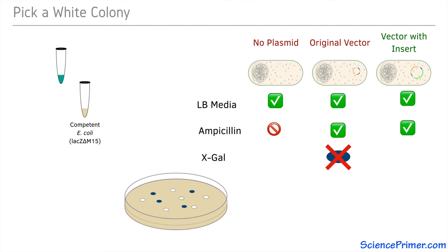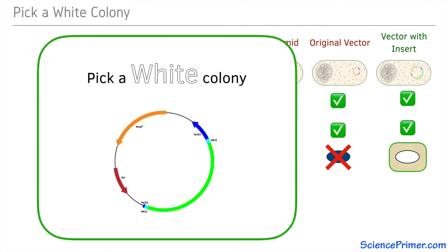In contrast, the white colonies are white due to their inability to degrade the X-gal, indicating they have the vector containing the desired insert. So picking a white colony will provide the starting material to grow large quantities of cells containing the target DNA.